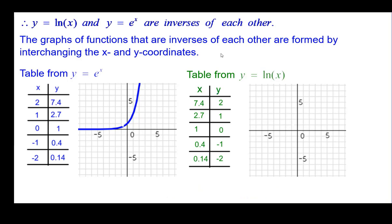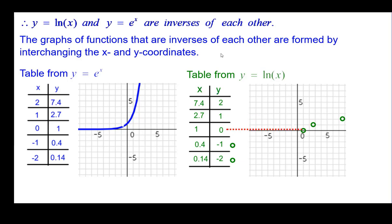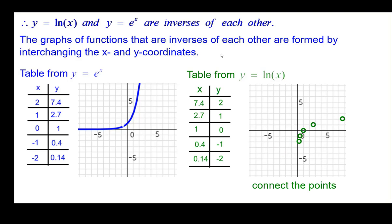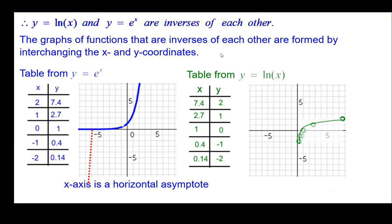Graphing this, we'll go ahead and plot these five points — going from right to left: over 7.4 and up 2, which is e squared; e to the first power, 2.7, up 1 approximately; the x-intercept at 1, 0; and then values start getting negative. There are the five points. We'll go ahead and connect the points. Looking back at e to the x, we can see that the x-axis is a horizontal asymptote for the exponential function, so that makes the y-axis a vertical asymptote — because these are inverses, switching x and y.